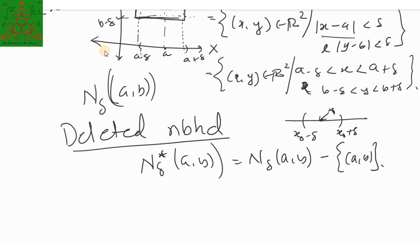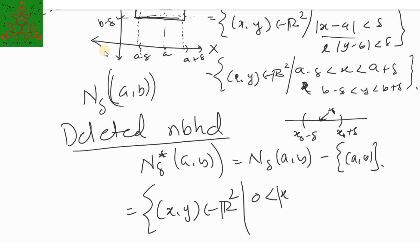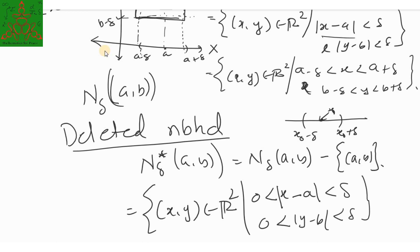Symbolically, the deleted rectangular neighborhood is the set of all (x, y) in R² such that 0 < |x minus A| < delta and 0 < |y minus B| < delta. This is called the deleted neighborhood.